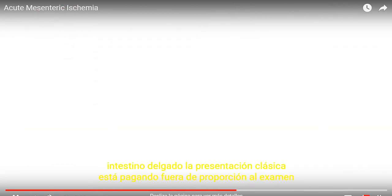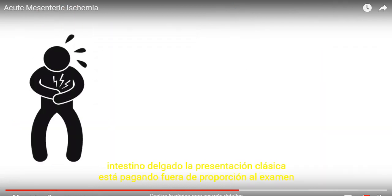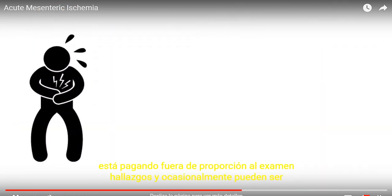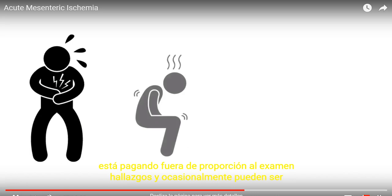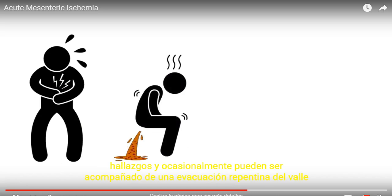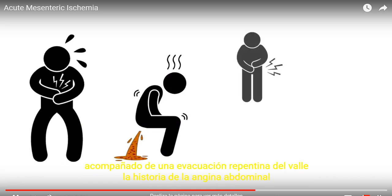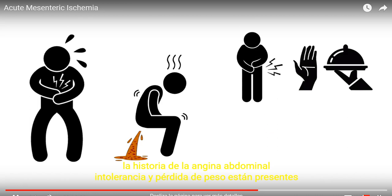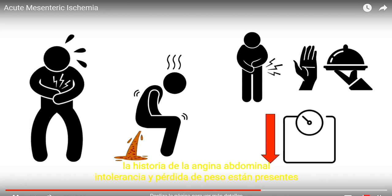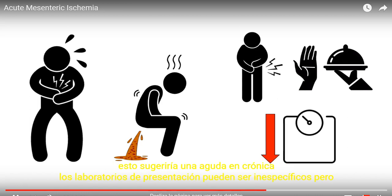The classic presentation is pain out of proportion to exam findings, and can occasionally be accompanied by sudden bowel evacuation. If a history of abdominal angina, food intolerance, and weight loss are present, this would suggest an acute on chronic presentation.